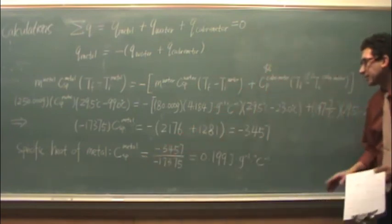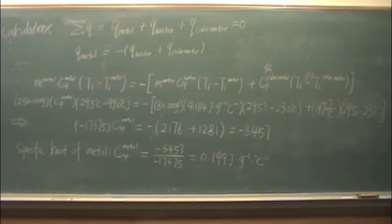So we can find the CSP of the metal. In our case, it's 0.199 joules per gram degree C.